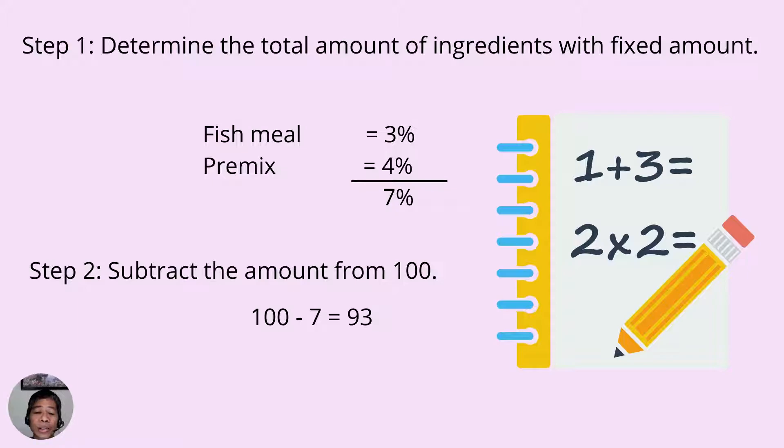93 is the combined amount of the remaining ingredients which in our example represents corn and soybean meal.